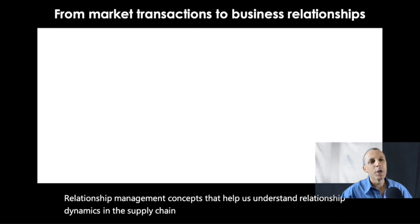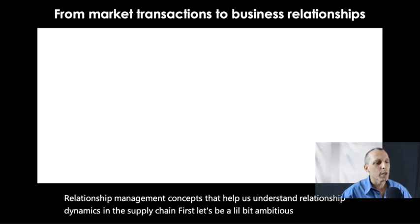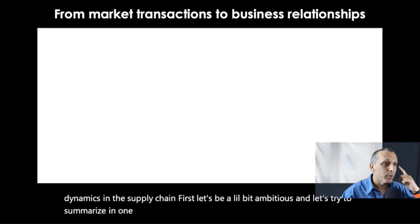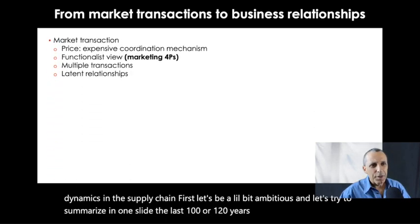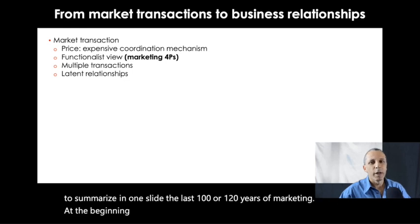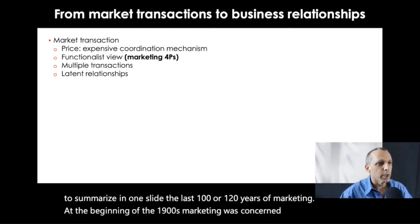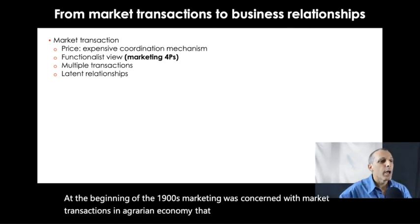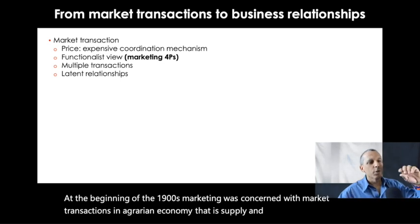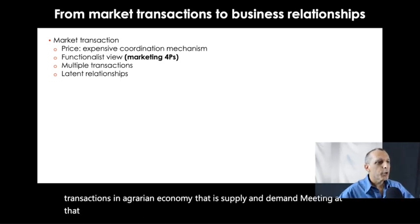Let's be a little ambitious and try to summarize in one slide the last 100 or 120 years of marketing. At the beginning of the 1900s, marketing was concerned with market transactions in an agrarian economy — that is, supply and demand meeting. At that point, the key coordination mechanism for the market was price.